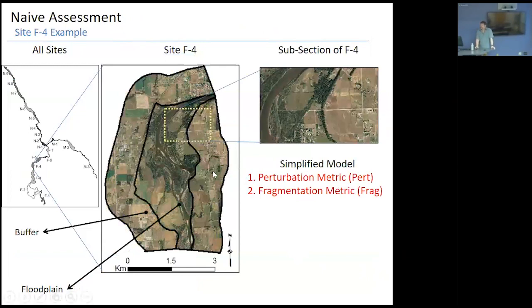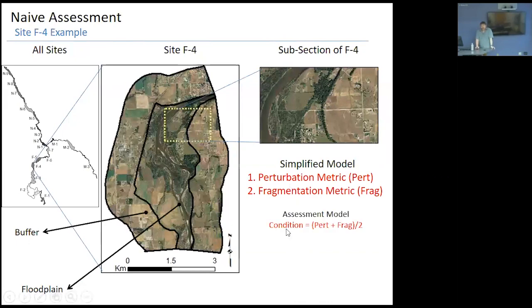We have a whole suite of inter-confluent sites coming down the north fork, middle fork, south fork, and main stem. For each site there's a floodplain based on break in topography and other surface features, then I put a one-kilometer buffer around that floodplain. I developed two simple metrics that show the response across the disturbance regime: one based on the ratio of natural or native cover to human-based cover, and one for fragmentation — how fragmented that cover is. Condition is simply those two added together and divided by two.